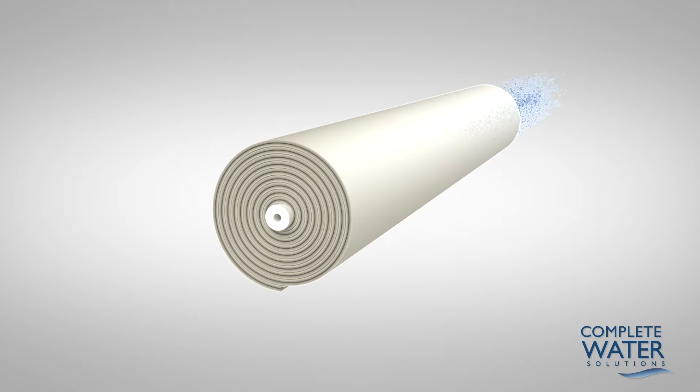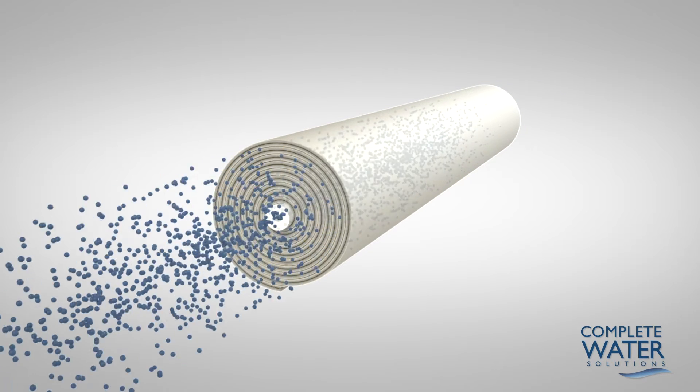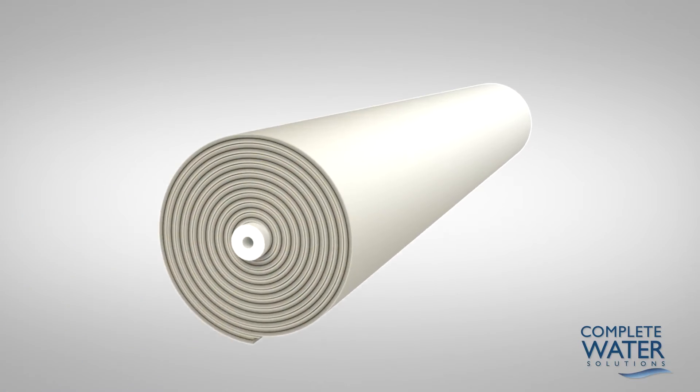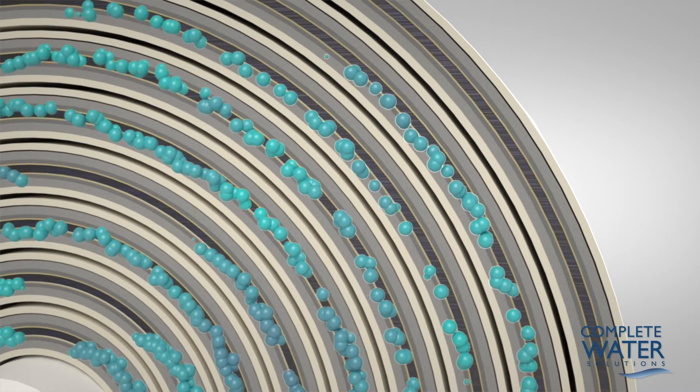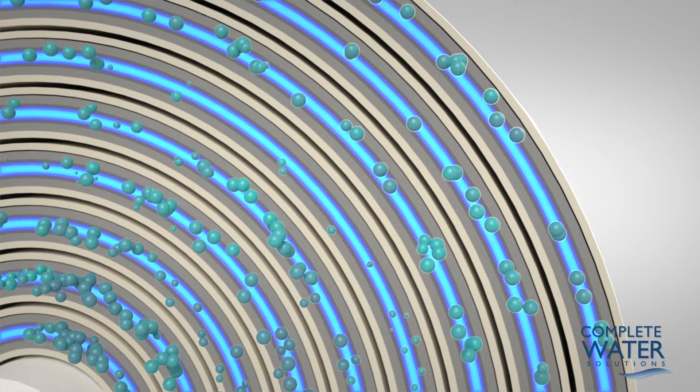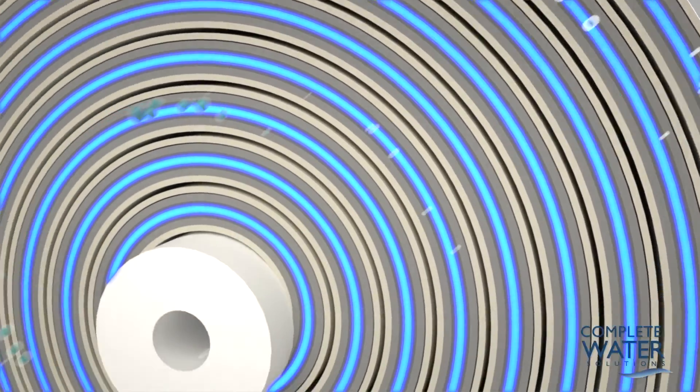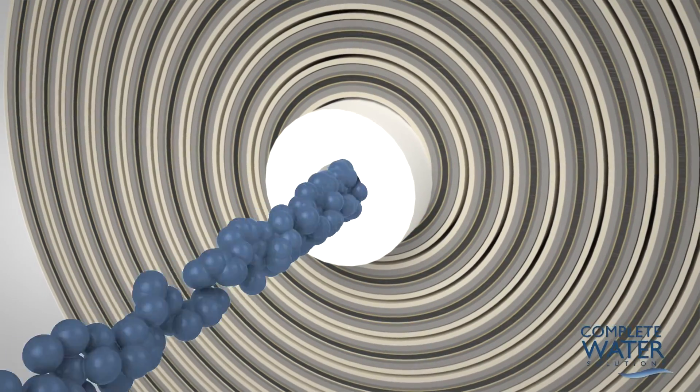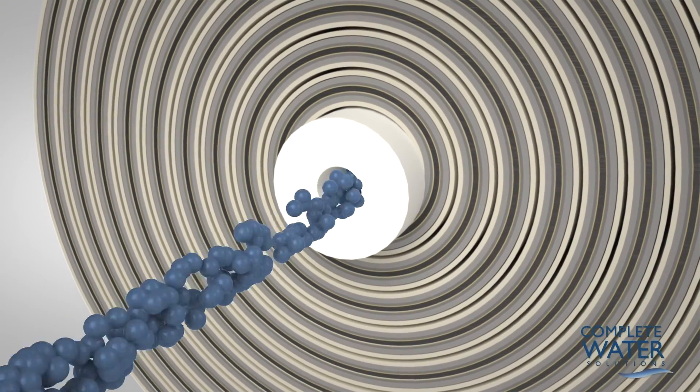Feed water is forced through the feed channel spacer and into the barrier layer of the membrane. Water passes through the membrane surface into the permeate channel. It flows in a spiral direction and collects in the core tube. This water is the final reverse osmosis water or permeate.